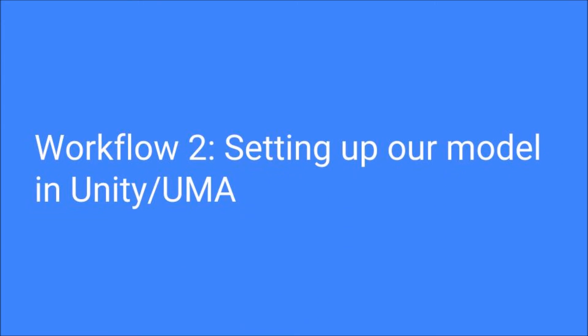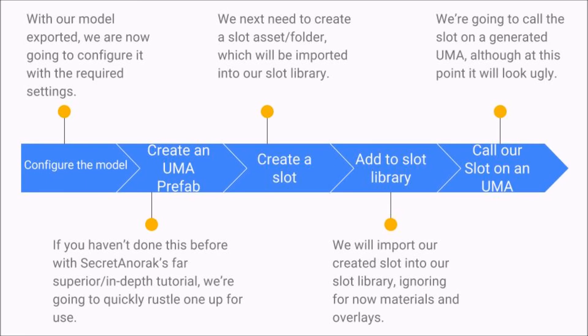After that, we're going to look at setting up the model in Unity, or in UMA. With our model exported, we first need to configure our model — make sure it has all the required settings, and there are a few things you do need to adjust. From there, we're going to create a UMA prefab. If you haven't done this already, this is essential, but you may have already done it following one of Secret Anorak's tutorials — it's a prefab with a slot library, overlay library, and so on. What we're going to do next is create a slot, which is actually, for those who have never done it before, possibly a bit counterintuitive, but actually a very simple and quick process. Note that you'll have to repeat it any time you edit a model.